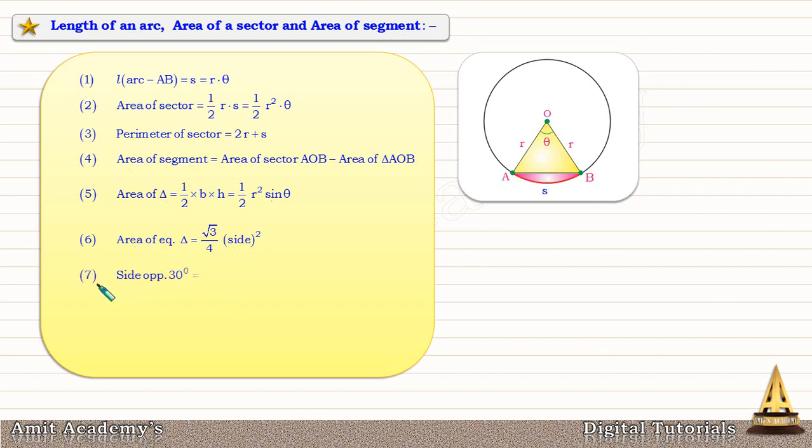Seventh formula: side opposite to 30 degree is 1 upon 2 into hypotenuse. In a right angle triangle, side opposite to 30 degree is 1/2 into hypotenuse. Side opposite to 60 degree is root 3 by 2 into hypotenuse. And side opposite to 45 degree is 1 upon root 2 into hypotenuse.